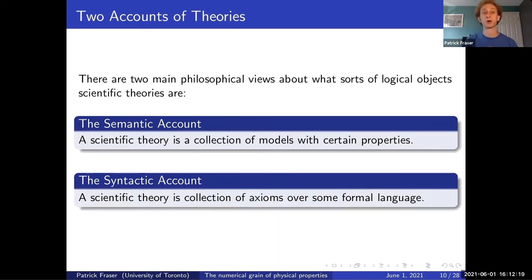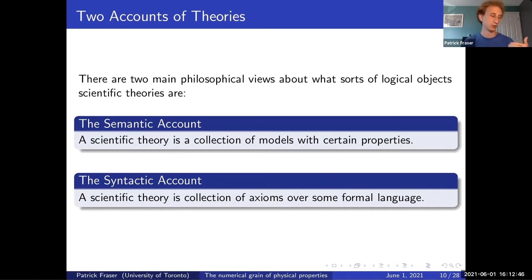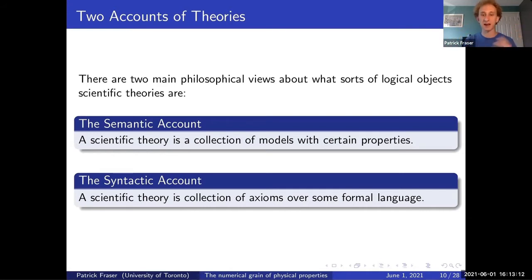When we try to talk about theories in a philosophical context, philosophers of science have argued for many decades about what logical objects scientific theories actually are. Answers typically fall into two categories. The first, the so-called semantic account of theories—the historical successor to the logical positivist program—says a scientific theory is a collection of models with certain properties. For instance, the theory of classical mechanics for the semanticist is a collection of systems in the world that behave in a way that looks like classical mechanics. The emphasis is on the models.